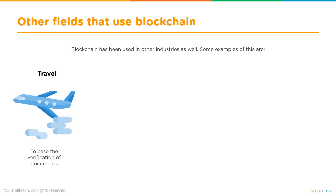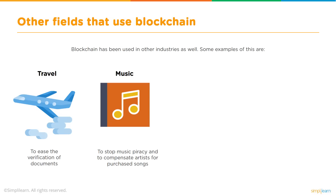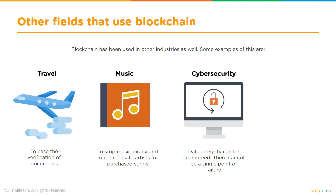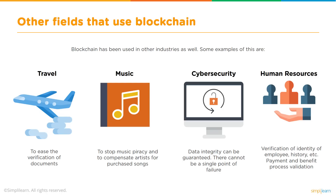There are other potential areas where blockchain can be applicable. In travel, blockchain eases the verification of documents and makes processing of transactions in travel and tourism seamless, including real-time hotel inventories. In the music industry, blockchain is used to stop music piracy and compensate artists for songs purchased online. In cybersecurity, data integrity can be guaranteed and there cannot be a single point of failure. In human resources, blockchain provides authenticity of employment history, identity of employees, payments and benefits, and process validation.